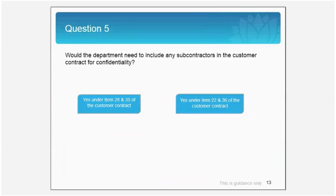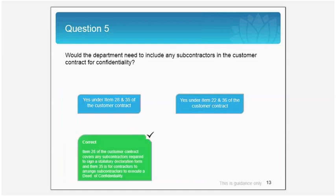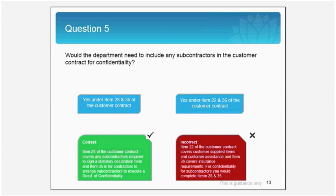Let's conclude with the item on subcontractors. Would the department need to include any subcontractors in the customer contract for confidentiality? Would it be item 28 and 35 or would it be item 22 and 36? Item 28 and 35 are the correct items to be included. Item 28 covers any subcontractors required to sign a statutory declaration form. Item 35 is for contractors to arrange subcontractors to execute a deed of confidentiality.